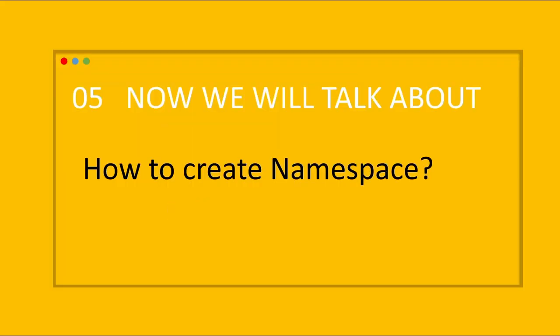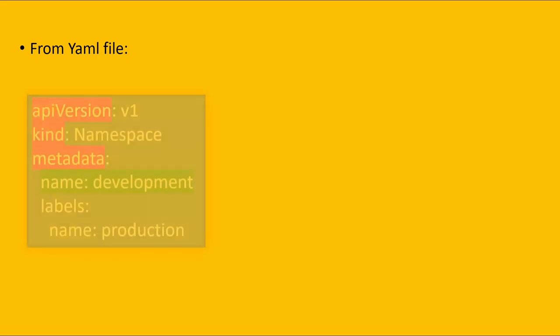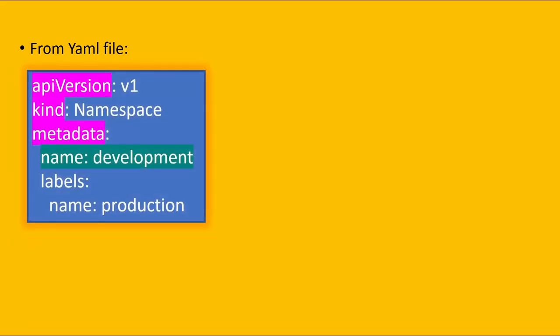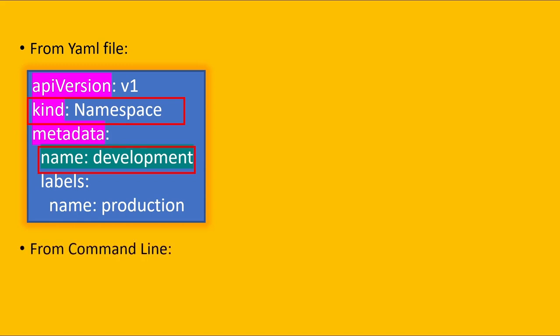We can create a namespace using a YAML file or from the command line. In the YAML file, we specify 'apiVersion: v1', 'kind: Namespace', and under the metadata field, the name of the namespace — for example, 'development'. From the command line, we can use the command 'kubectl create ns operation' — a very simple, straightforward command.